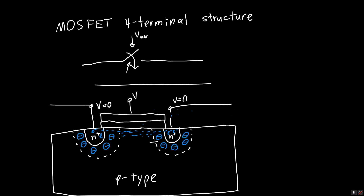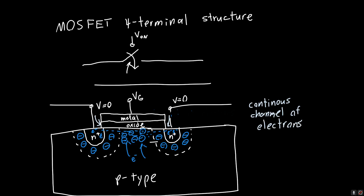If we apply a positive voltage Vg to this metal — and this is an oxide — if we apply a positive enough voltage to Vg, we'll have a depletion region near the edge initially, but we'll get a bunch of electrons that form this channel. And if we allow our metal and oxide to extend just a little bit over on either side of these n-plus regions, then we'll have a continuous channel of electrons. So we've created a switch with this MOS capacitor structure.